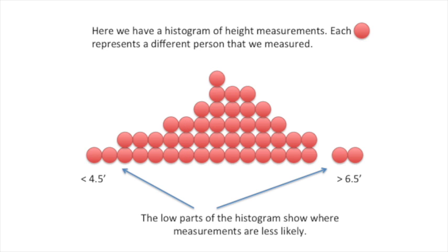The low parts of the histogram show where measurements are less likely. In this case, we didn't measure many people that were shorter than 4 and a half feet or taller than 6 and a half feet.